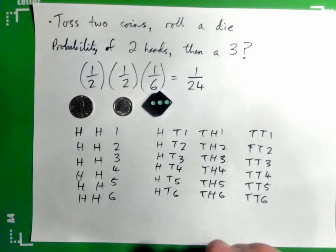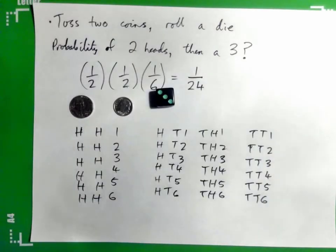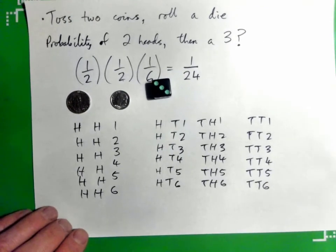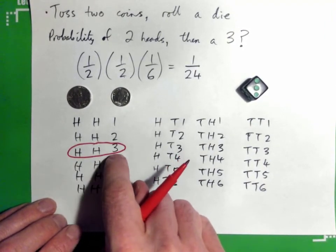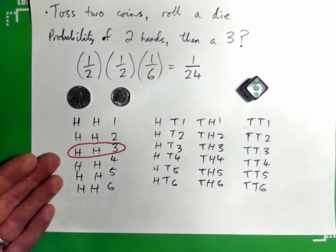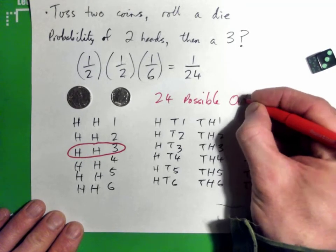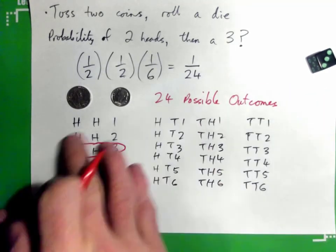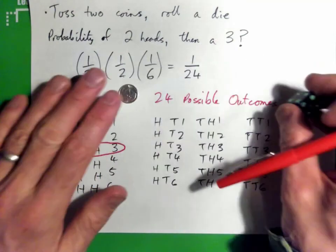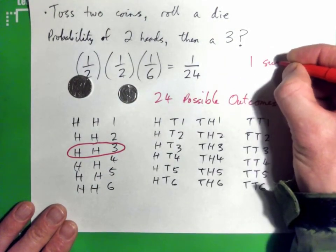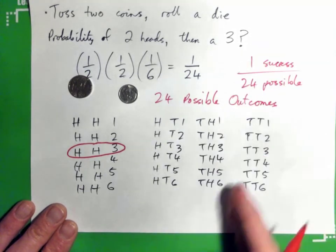Now we've added two coins and one die, which is more complicated than before. The outcome we're looking for — head, head, then a three — is just one out of all possible outcomes. There are 24 possible outcomes in total, and only one success we're looking for. So the probability is one out of 24.